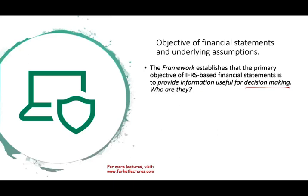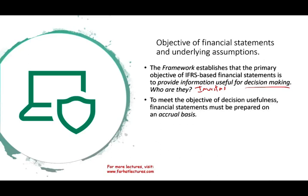To meet the objective of decision usefulness, financial statements must be prepared on accrual basis — not cash basis. Accrual basis gives us more information about the future through accounts such as accounts receivable, which tells us how much cash we could receive in the future, and accounts payable, which tells us how much we need to pay. The accrual basis is assumed to be superior in predicting the future of the company, which is why the framework requires it.